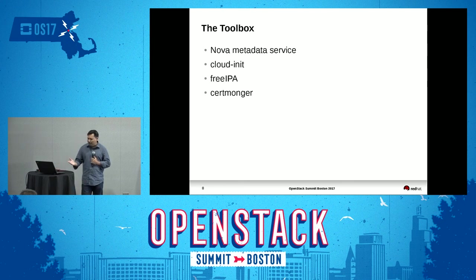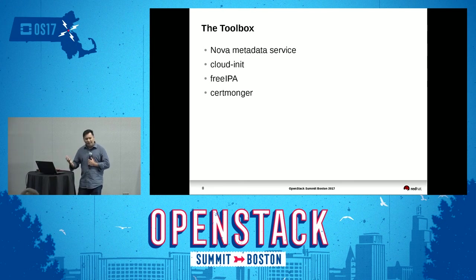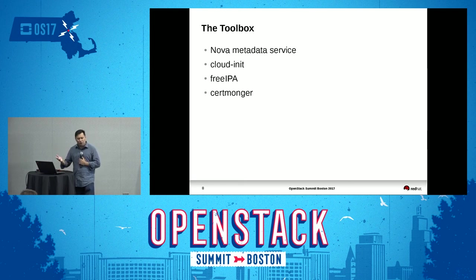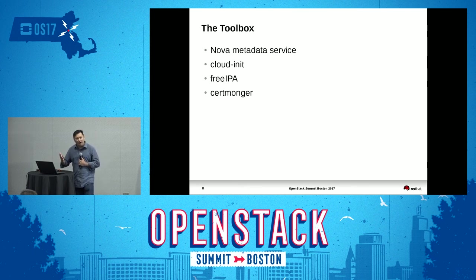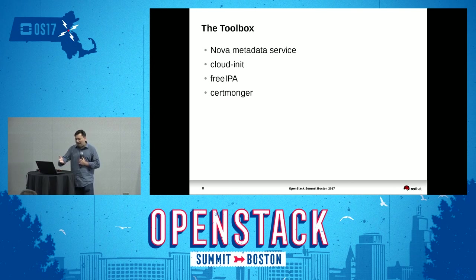So we have the basic toolbox. We have the NovaJoin service, which is a metadata service that talks to IPA and to Nova. We have CloudInit, which is the sort of first-boot for a cloud instance — that's going to run a script that will go and get the metadata. Then we have FreeIPA and, of course, Certmonger, which is a service on the system that is going to request the certificates.